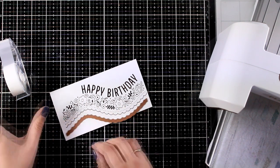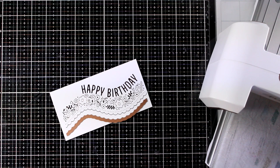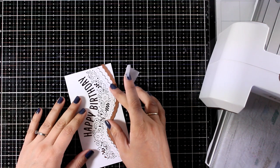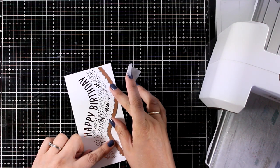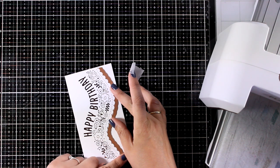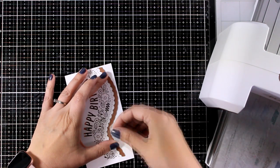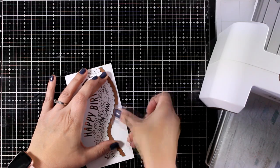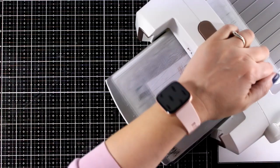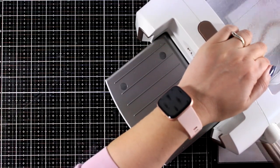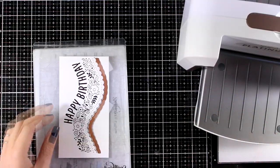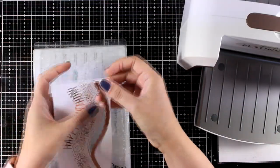The April foiling kit comes with this scallop die as well that matches perfectly with the design. I'm going to align it with the foiled area and then I'm going to place some low tack tape to keep it in place. I'm going to run that through my die-cutting machine and I will end up having a lovely layer that I can pop on my card.